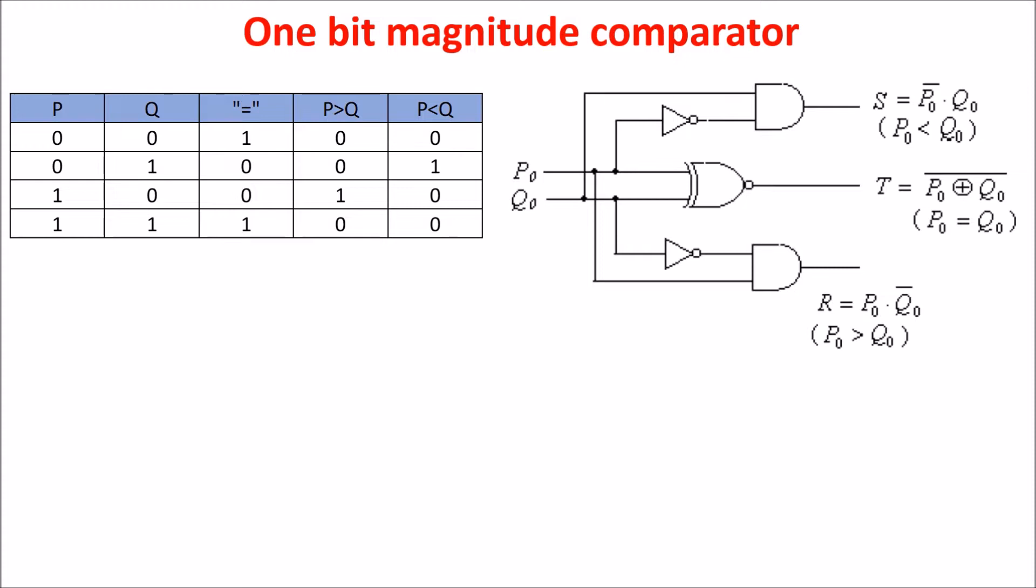If for example both the inputs are at one, we get one on the output of the XNOR gate indicating that the two inputs are equal. Moreover, we get a zero on the output of the two inverters.